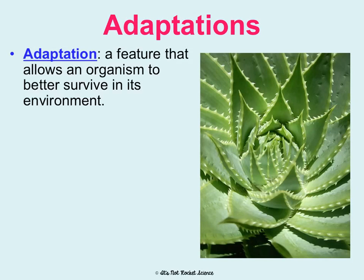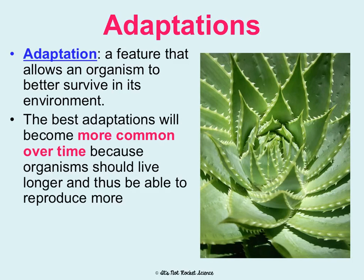Adaptations are another principle of natural selection. An adaptation is a noun — it is not a verb, it's not something you can do. It's a trait or feature that you have that makes you better at surviving in your environment. Not every trait you have is an adaptation, but some are. For instance, cacti have adaptations: they are able to store water in ways other organisms can't, and they have alternate pathways for photosynthesis so they don't lose too much water.